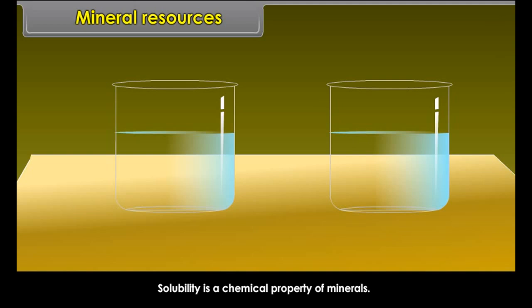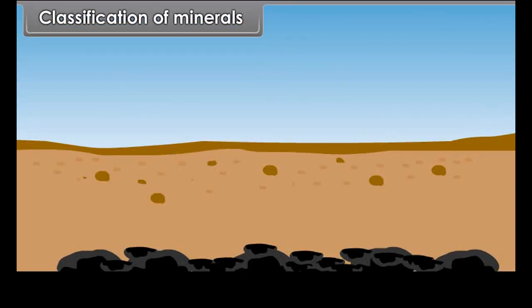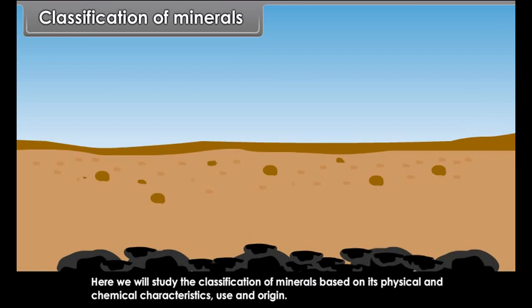Solubility is a chemical property of minerals. Example: salt is soluble while quartz is insoluble. Here, we will study the classification of minerals based on its physical and chemical characteristics, use and origin. They are metallic and non-metallic minerals.